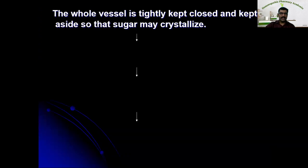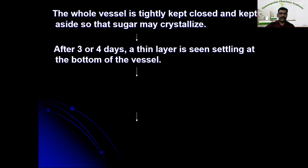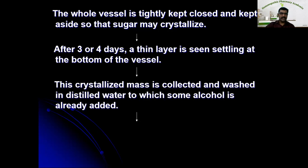The whole vessel is tightly closed and kept aside so that the sugar might crystallize. After three or four days, a thin layer is seen settled at the bottom of the vessel. This crystallized mass is collected and washed with distilled water, and already some alcohol is present in it.